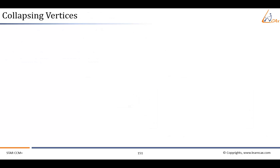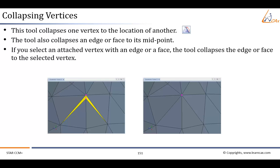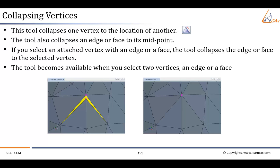The next tool is 'Collapsing Vertices'. This tool collapses one vertex to the location of another. The tool also collapses an edge or face to its midpoint. If you select an attached vertex with an edge or a face, the tool collapses the edge or face to the selected vertex. The tool becomes available when you select two vertices, an edge, or a face.